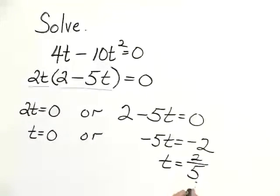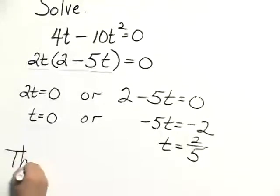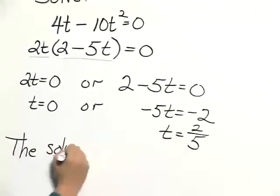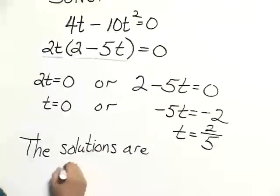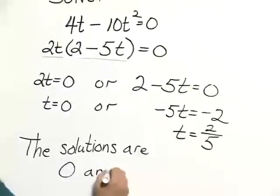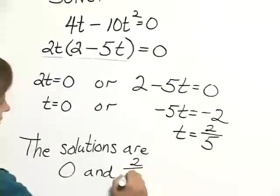Both 2 fifths and 0 would check in the original equation, so the solutions are 0 and 2 fifths.